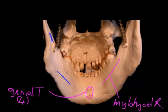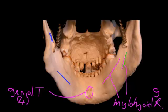Just below and adjacent to the mylohyoid ridge is a groove running along here, and that groove is called the mylohyoid groove. That's where the mylohyoid nerve runs. It comes off and runs to supply the mylohyoid muscle, and another muscle that we'll look at in just a minute.